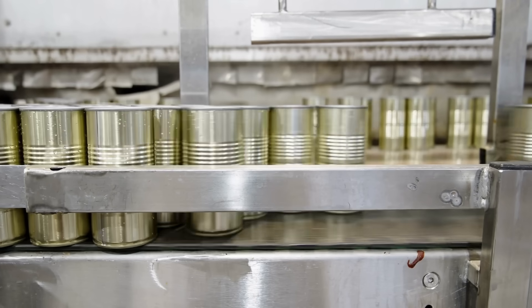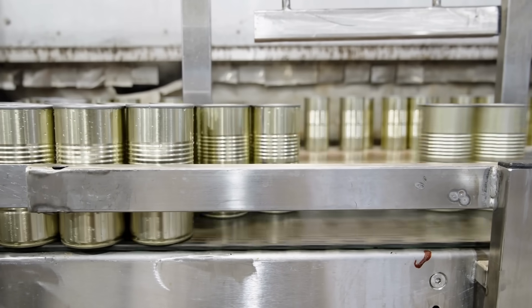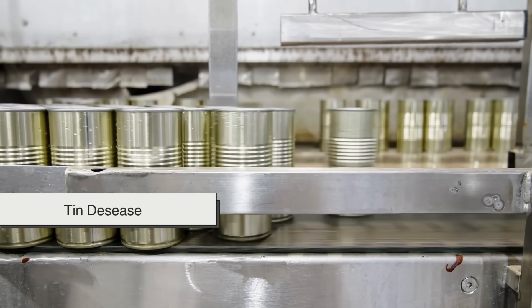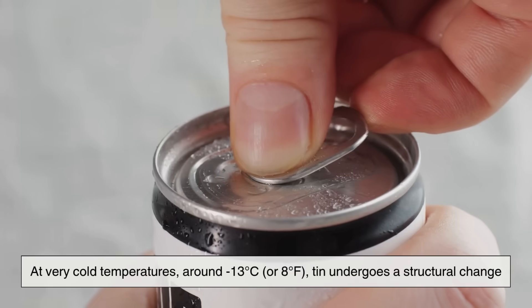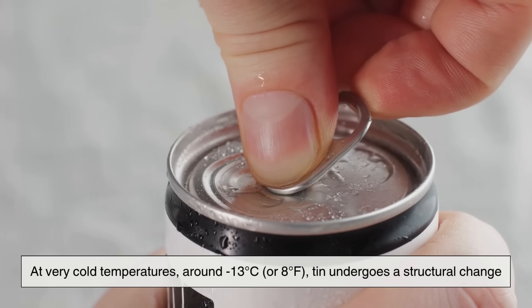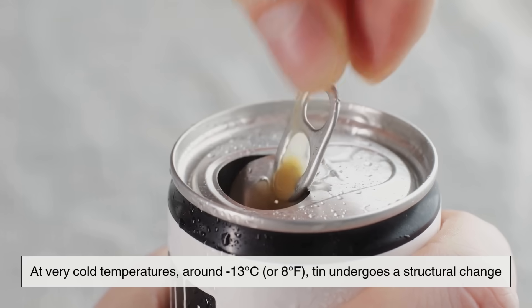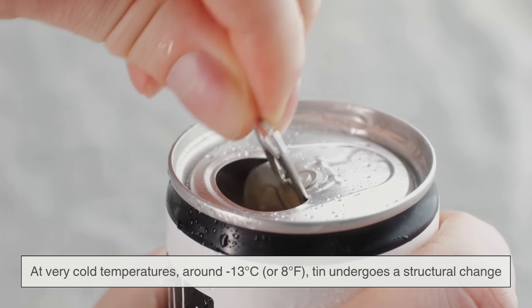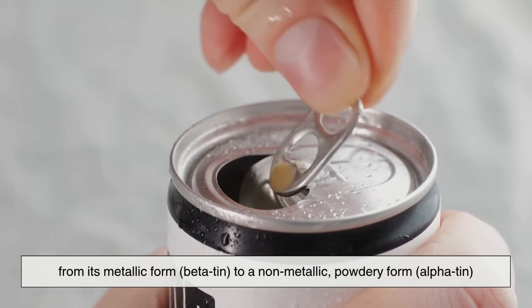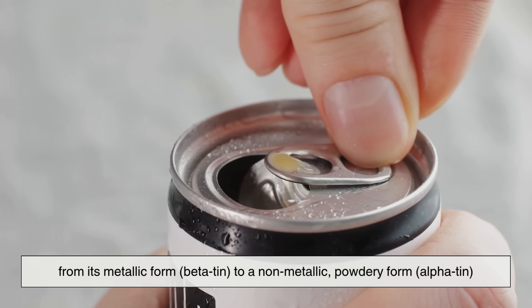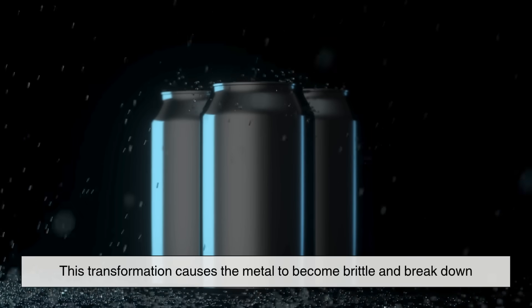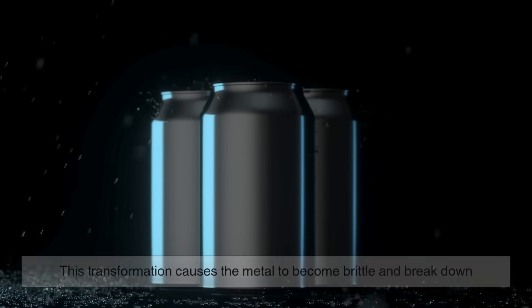While we're on the topic, tin has another strange quality worth mentioning - something called tin pest or tin disease. At very cold temperatures around minus 13 degrees Celsius, or 8 degrees Fahrenheit, tin undergoes a structural change from its metallic form, beta tin, to a non-metallic powdery form, alpha tin. This transformation causes the metal to become brittle and break down.